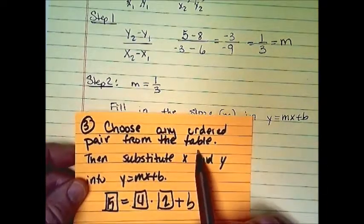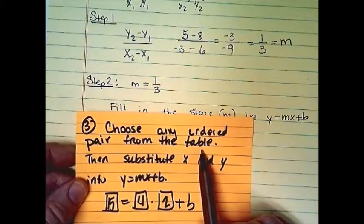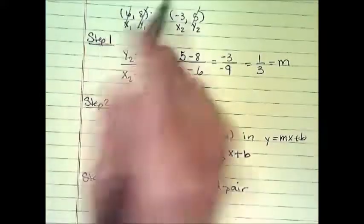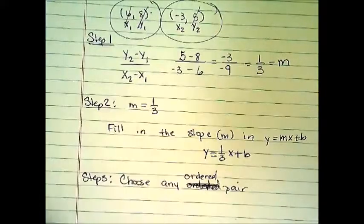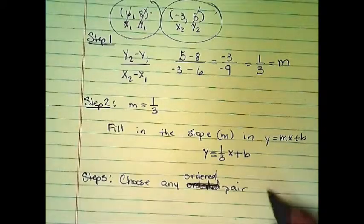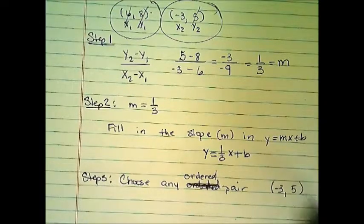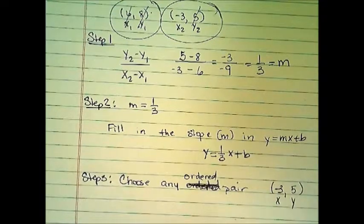It says from the table on the card because we're working from a table, but we don't have a table here. So you just choose either one of these that you want to choose. And I'm going to choose negative 3, 5 as my ordered pair. That's my x value. That's my y value.